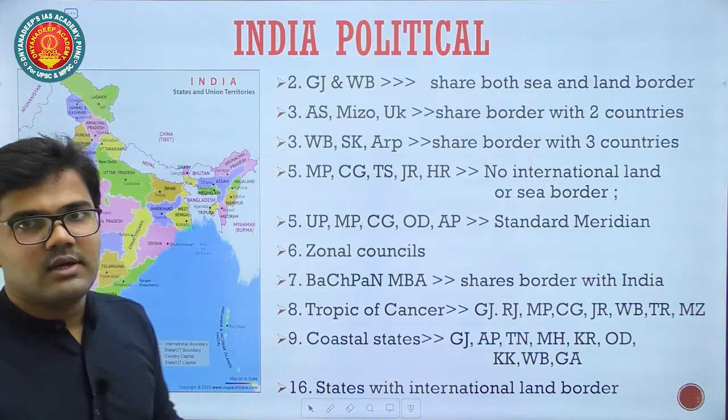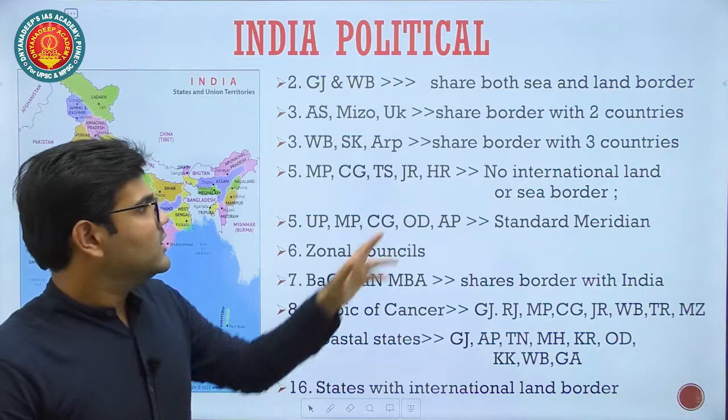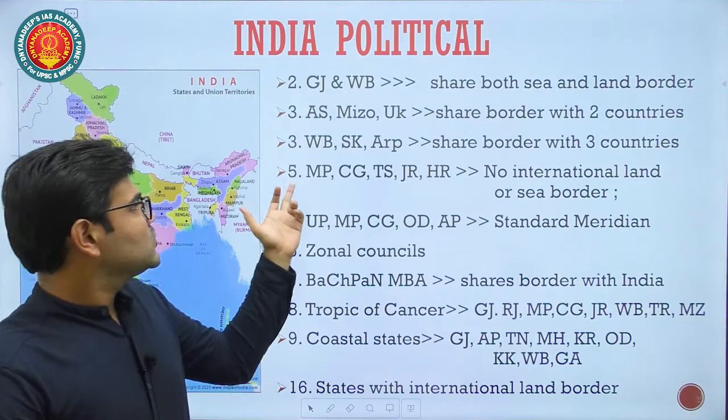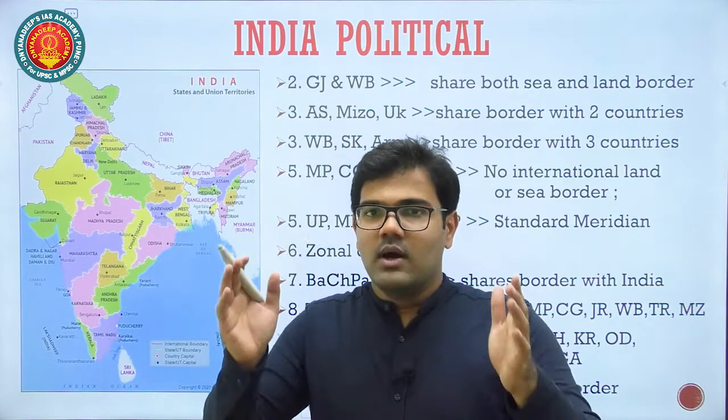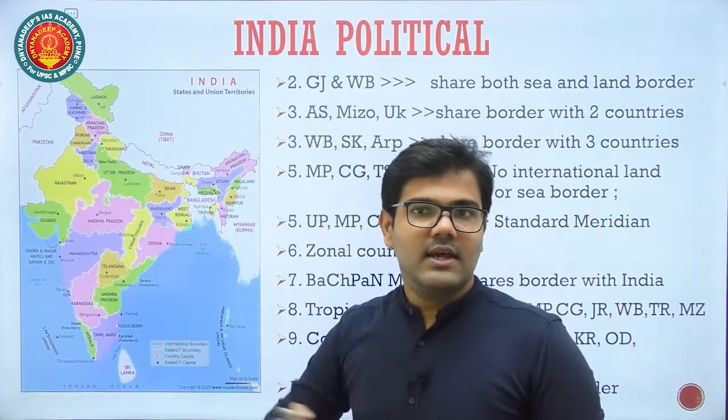There are 5 states that are landlocked — they do not have any international land or sea border: Madhya Pradesh, Chhattisgarh, Telangana, Jharkhand, and Haryana. Once UPSC asked how many states you would pass through when travelling from Nagaland to Kerala, so you should have a clear mind-map of all states and their land borders.